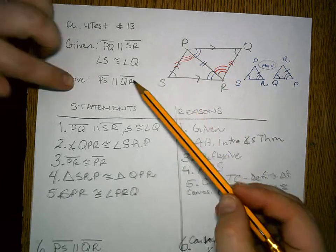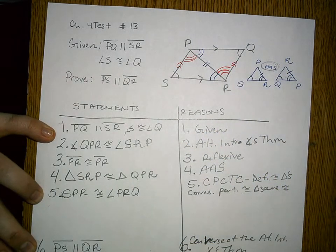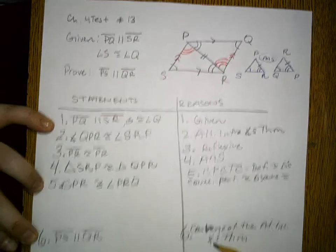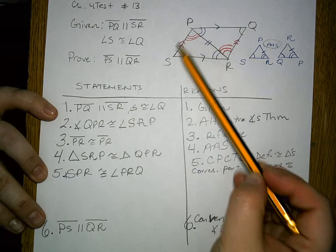Write down what you have to prove as well as the given in your statement-reasons column and if you can, write down the reason of what you have to prove if you can already figure that out from the drawing.